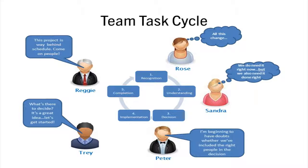Putting this team through the Team Task Cycle, you can see they're at different points in the process. Rose is still stuck at Recognition, making sense of the change. Sandra is at Understanding — she realizes what needs to be done but needs more data. Peter isn't sure the right people are involved, so he's not ready to make a Decision. Trey is ready to go and just wants to get started. Reggie feels this should have been done yesterday and has a much stronger sense of urgency.